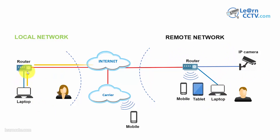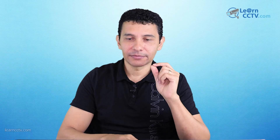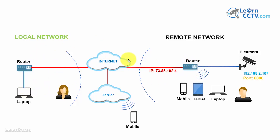The traffic comes in, goes to the router, gets forwarded to the camera after port forwarding, and then comes back. To summarize what you need: the IP address of the camera, the port the camera is using, and the external IP of the router — because the remote user needs to know which IP address to reach.